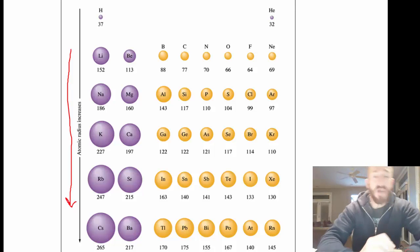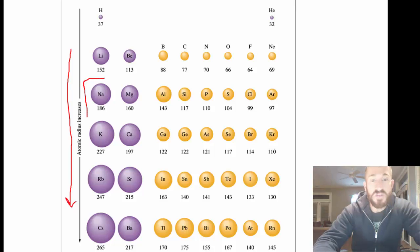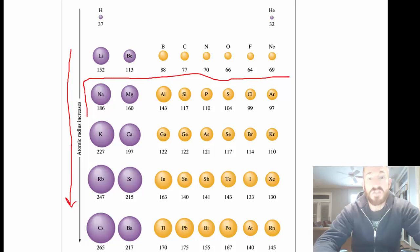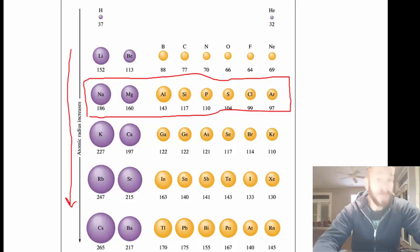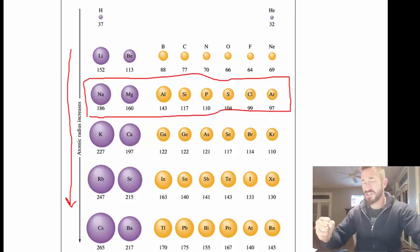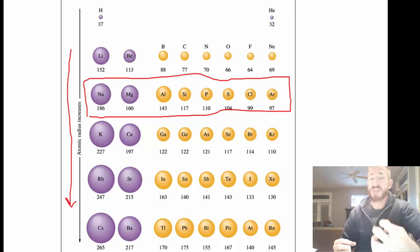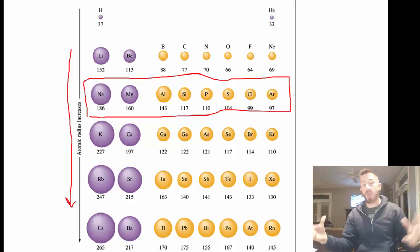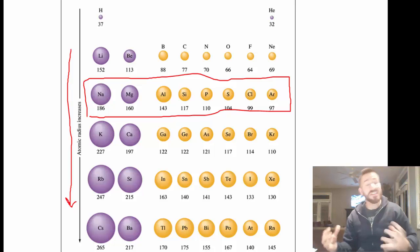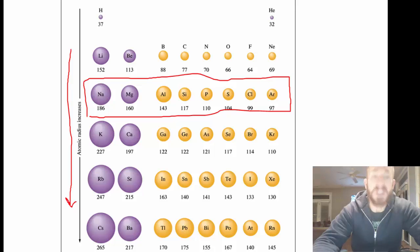The other thing we want to look at is what happens in a period or row. In the row of sodium, magnesium, aluminum, silicon, phosphorus, sulfur, chlorine, and argon, atoms get smaller as you go to the right. The reason is effective nuclear charge. Even though we're adding electrons as we go to the right, those electrons aren't shielding electrons. So the protons are able to pull the electron cloud in closer and closer, and the atom gets smaller and smaller as you go to the right because of the increase in effective nuclear charge.